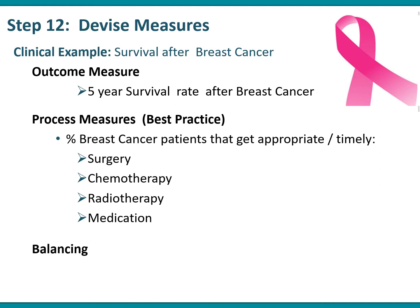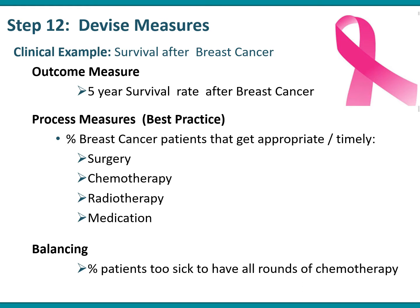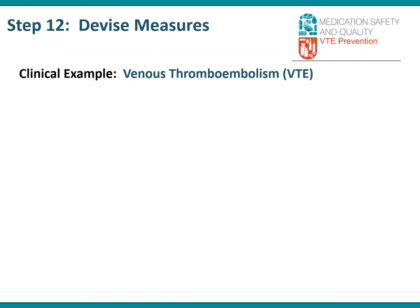A balancing measure, often called a barrier measure, might look at the percentage of patients that were too sick to have all their rounds of chemotherapy. This would be a knock-on effect or a side effect of some of the treatment, and that would be a balancing measure that you could use.